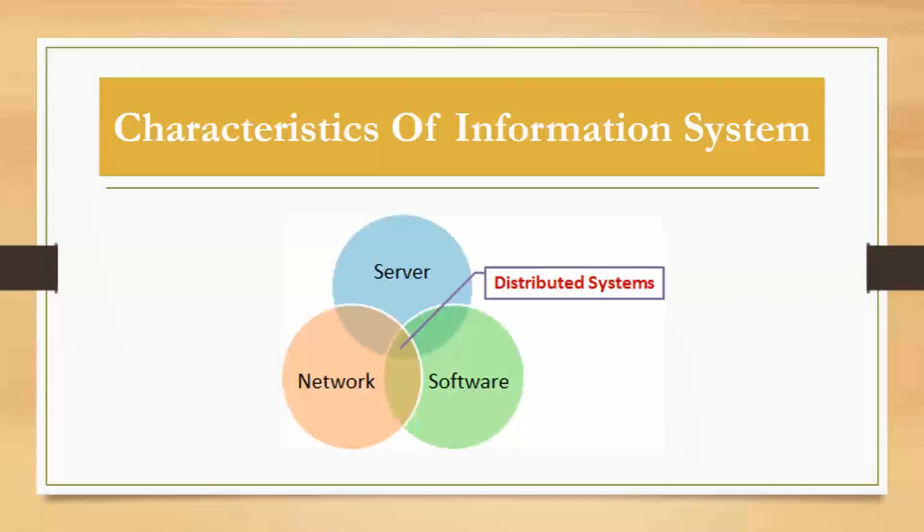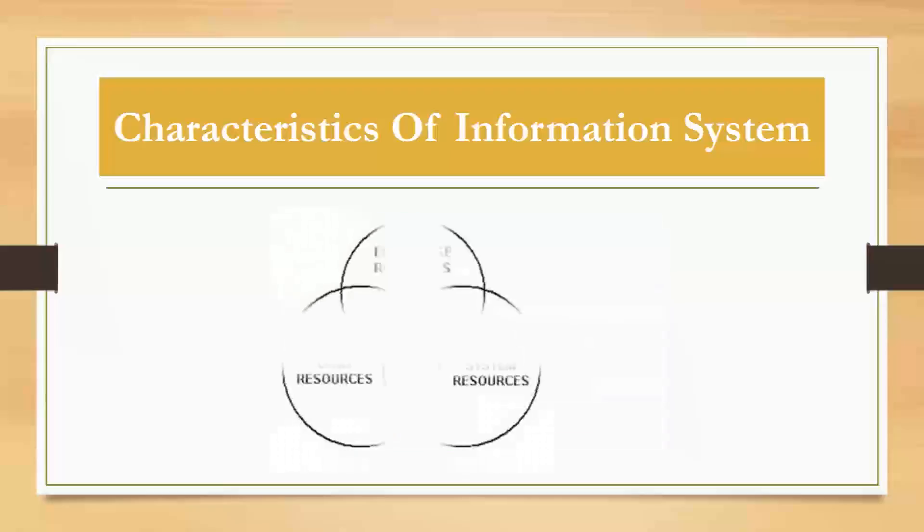The next is distributed systems. Information systems are distributed; one example is banking systems. The next is information as a resource, meaning in information systems, information is used as a resource.